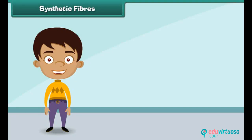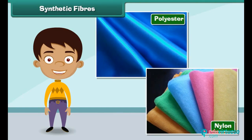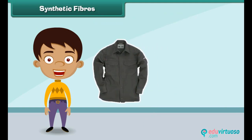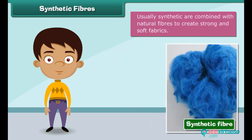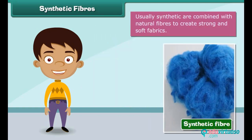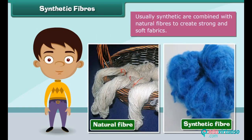Synthetic fibers are man-made. Nylon, polyester, etc. are examples of synthetic fibers. Fabric made from synthetic fibers is cheap, dries easily and does not wrinkle. Usually, synthetics are combined with natural fibers to create strong and soft fabrics.